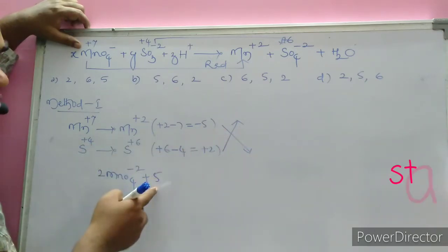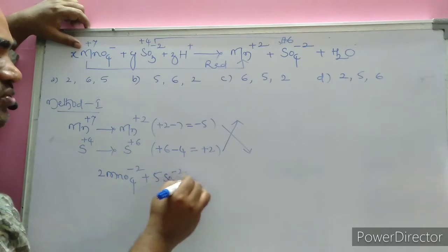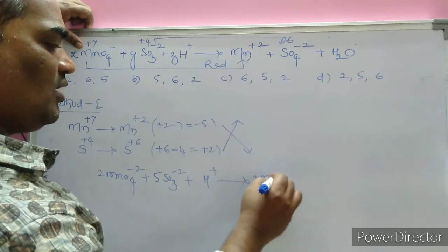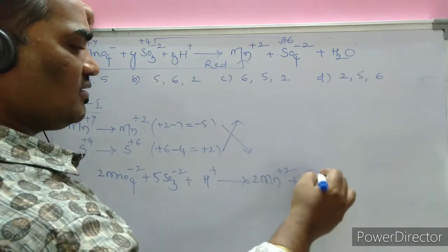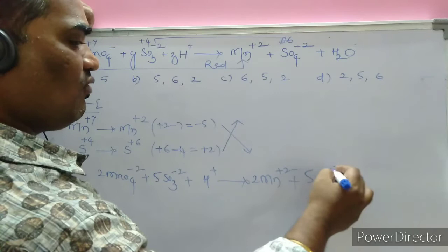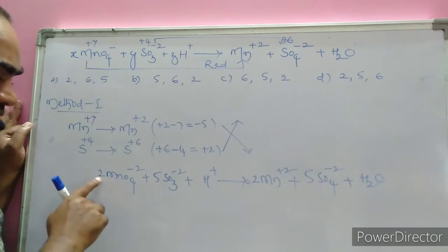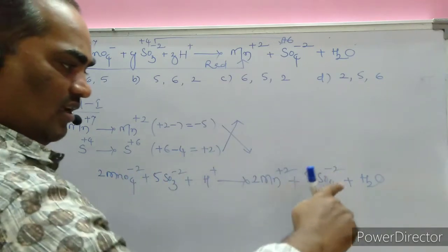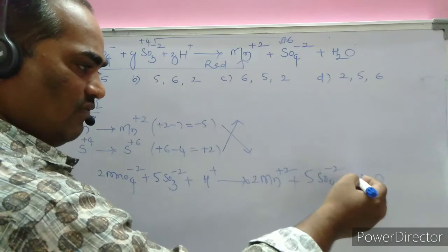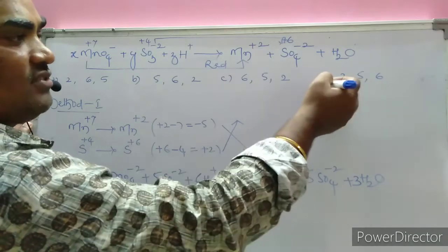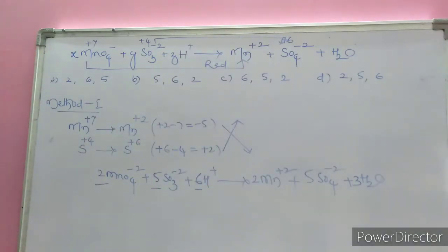So we write: 2 MnO4⁻ plus 5 SO3²⁻ — leaving H⁺ for now — gives 2 Mn²⁺ plus 5 SO4²⁻ plus H2O. Counting oxygens: left side 2×4 = 8, plus 5×3 = 15, total 23. Right side 5×4 = 20, plus 3×2 = 6, balanced. The coefficients are 2, 5, 6. This is Method 1.